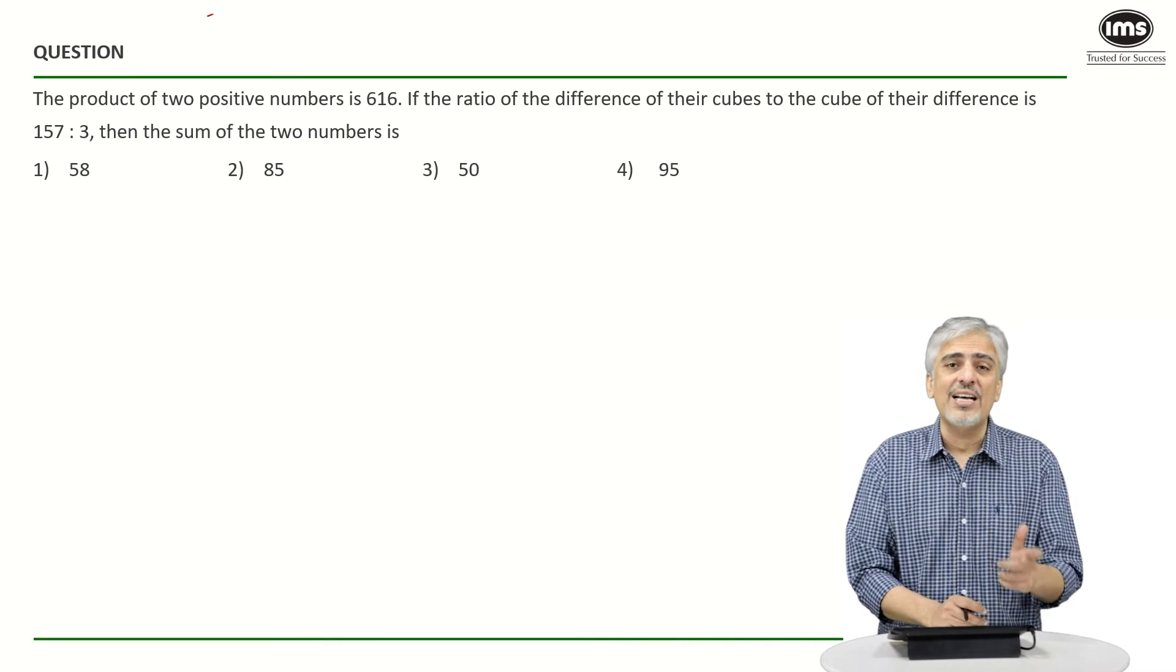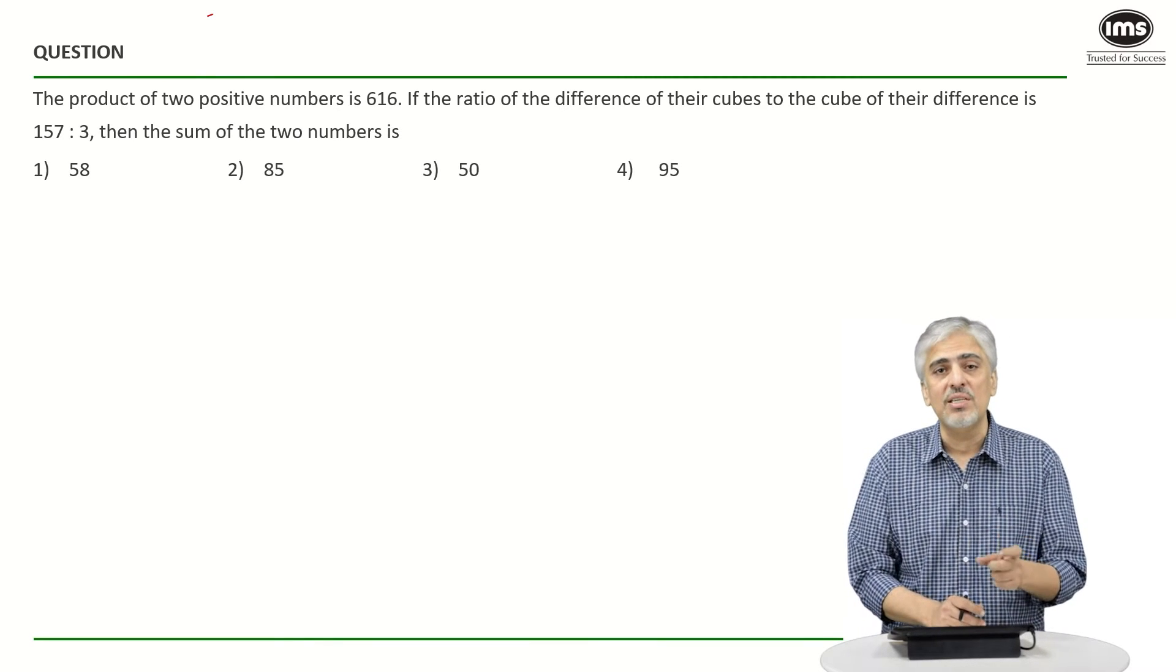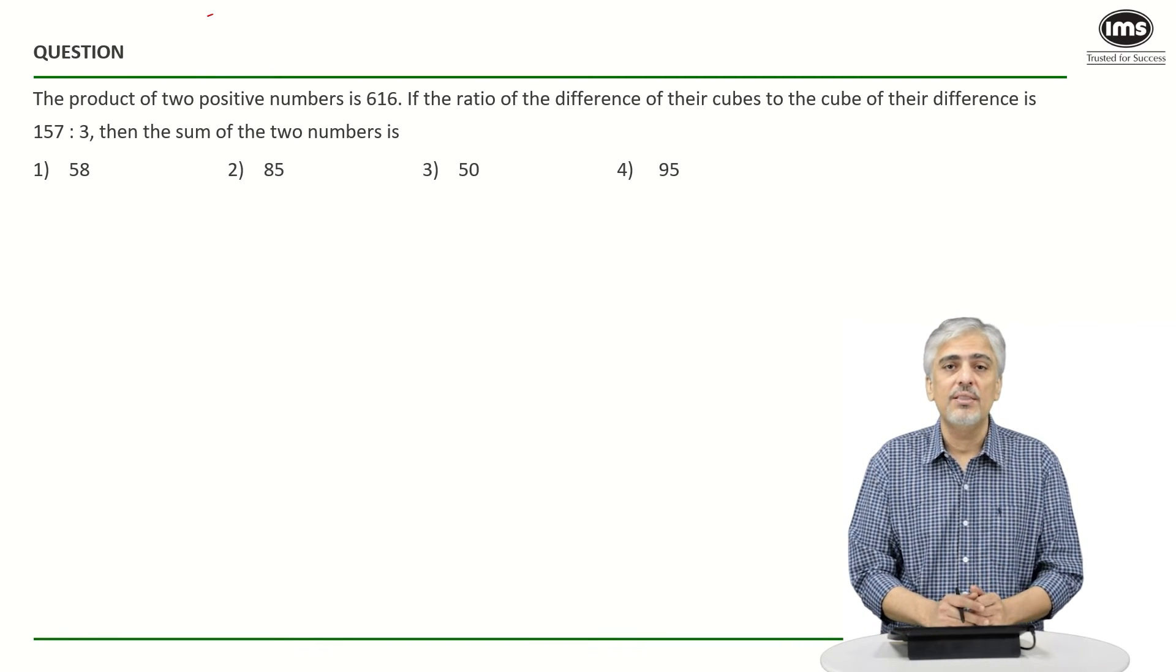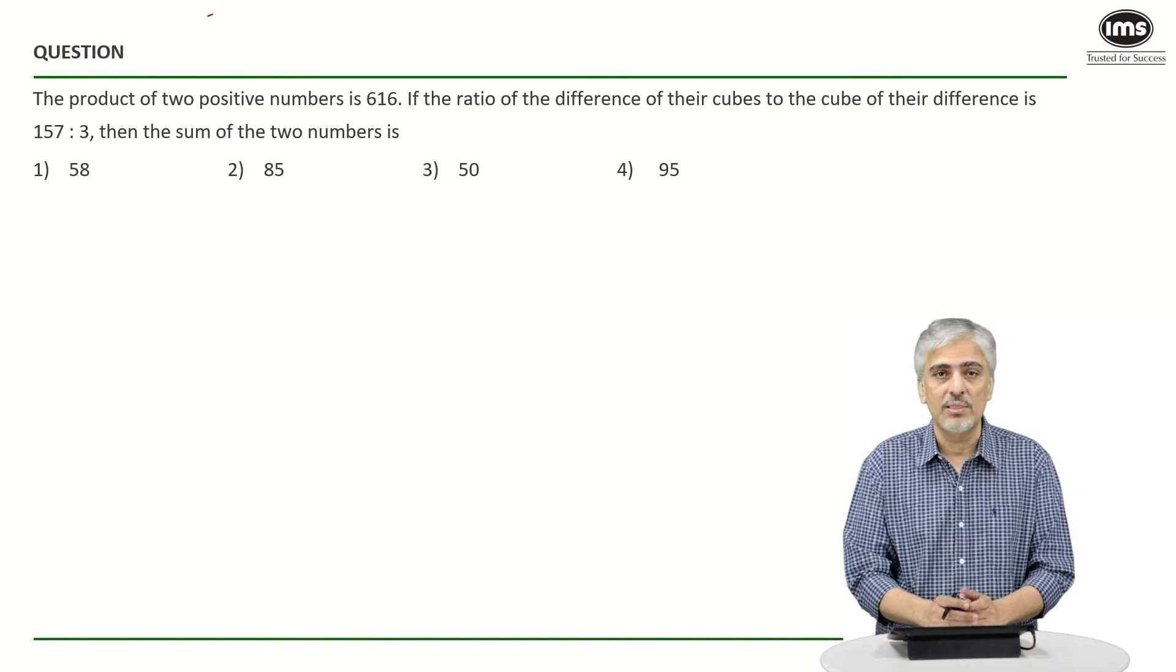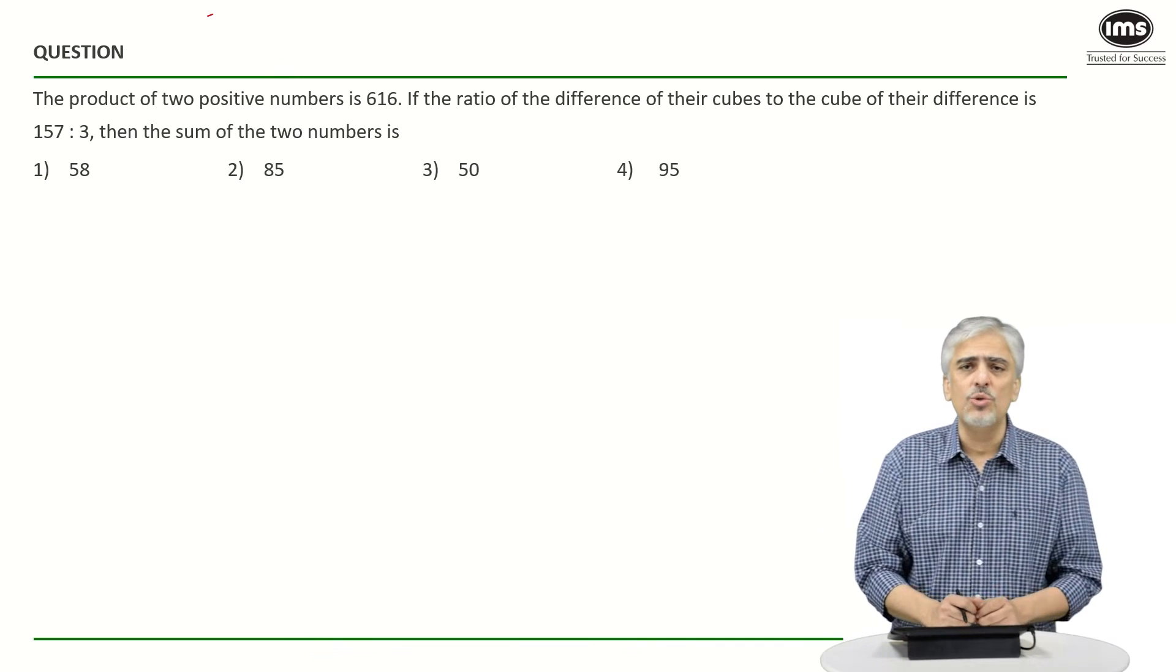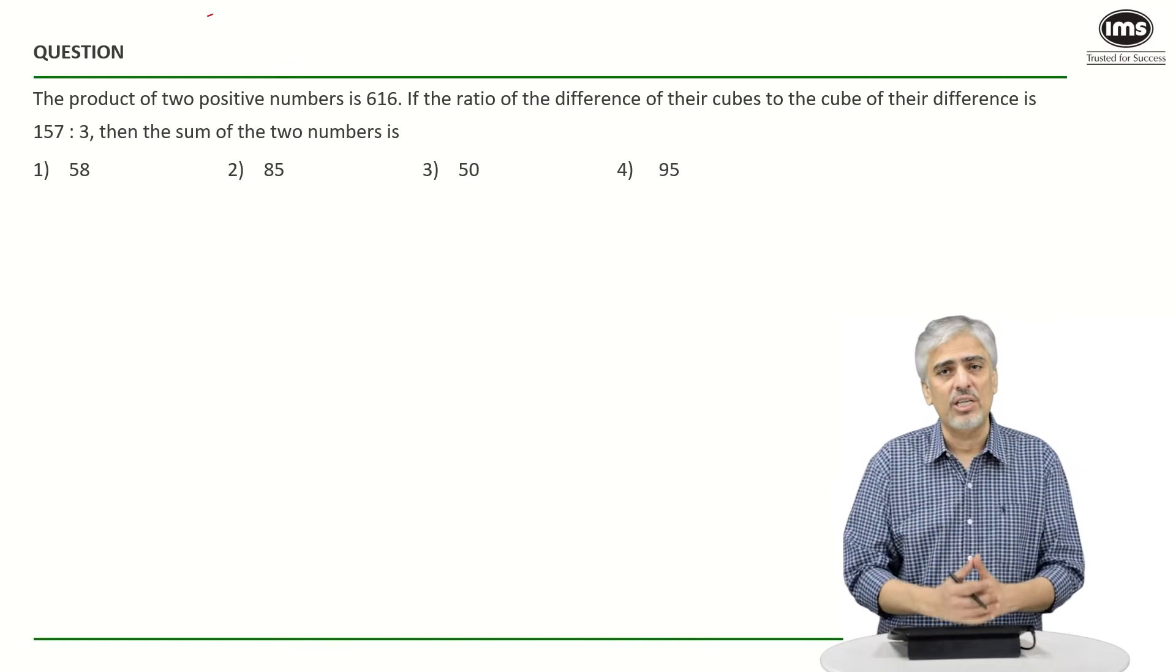Now importantly they didn't ask for the numbers. If they had asked for the numbers it would have been a very easy question because then you could have used options easily. They have asked for the sum of the numbers. So let's first do the regular approach and then we'll see whether we could think of something else.